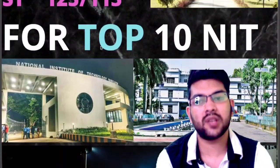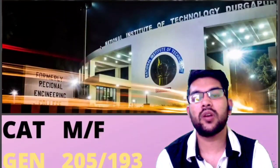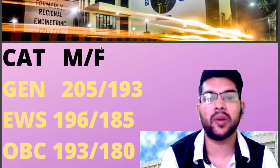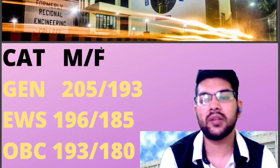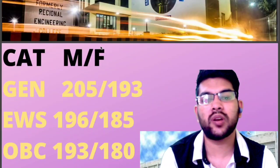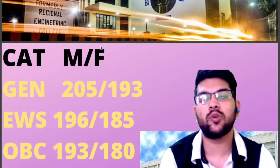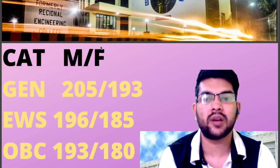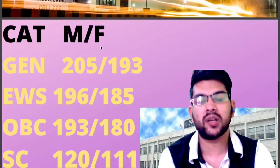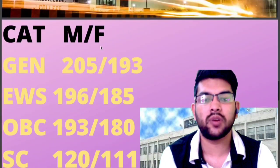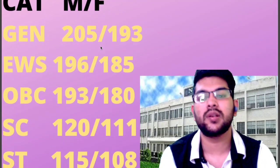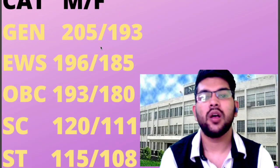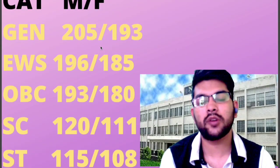For top 10 NITs, the safe scores are: General — 205 (male) and 193 (female); EWS — 196 (male) and 185 (female); OBC — 193 (male) and 180 (female); SC — 120 (male) and 111 (female); ST — 115 (male) and 108 (female).